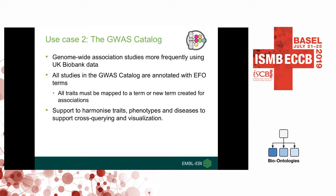A second use case is the GWAS catalog of published genome-wide association studies. Increasingly, GWAS are using UK Biobank data, which requires mapping and annotating to EFO terms to be included in the GWAS catalog. This will help to support harmonization of traits, phenotypes, and diseases, and support cross-querying and visualization.